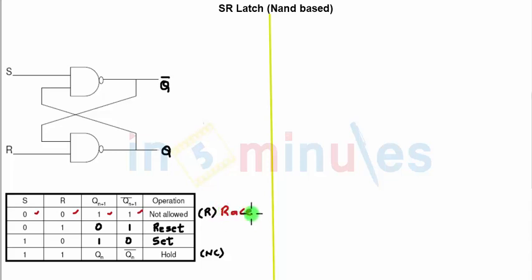The rest is straightforward: when R is 1, the output is reset to 0. When S is 1, the output is set to 1. And when both S and R are 1, the output holds the previous value. So this is nothing but a NAND-based SR latch.